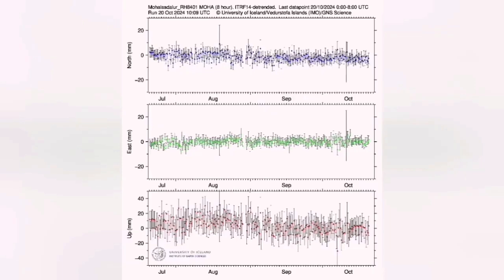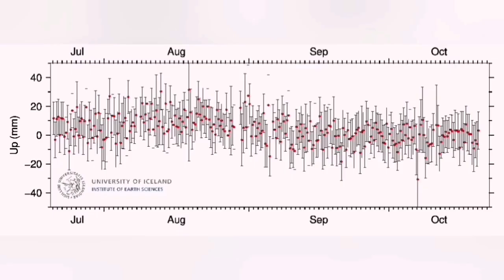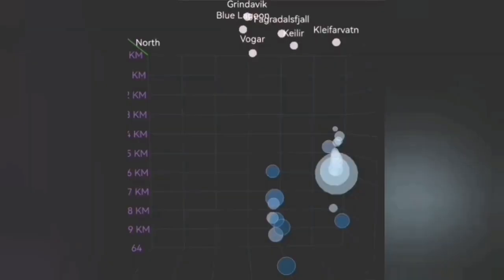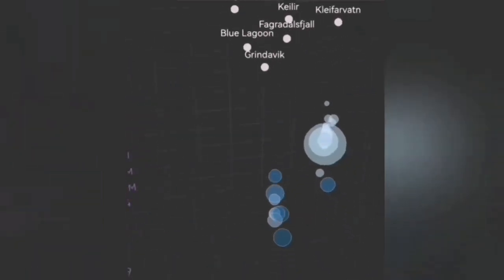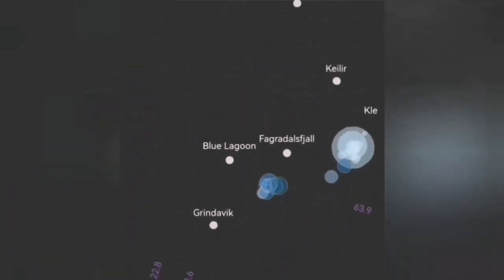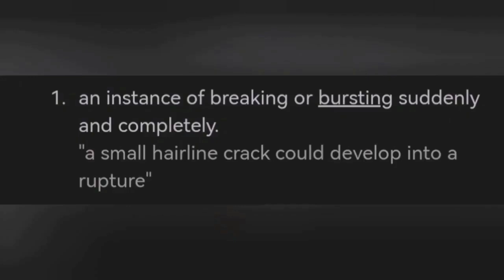These are the definition of the word tectonic, and this is what we see here: sudden jerky movement which creates rupture and breaking apart of the Earth's crust. That is tectonic. This is the definition of the rupture—breaking or bursting suddenly.